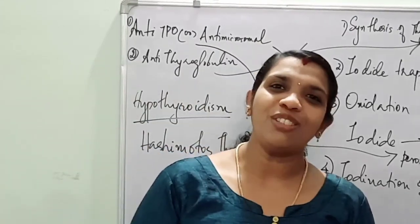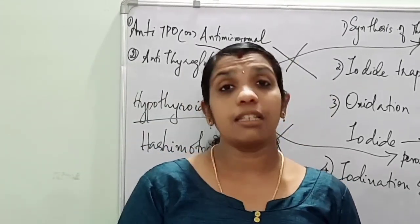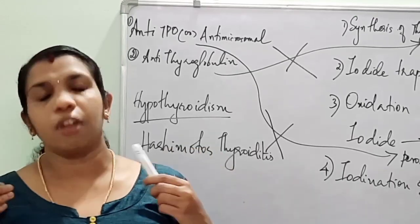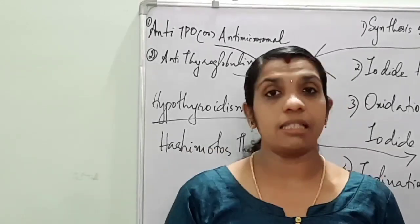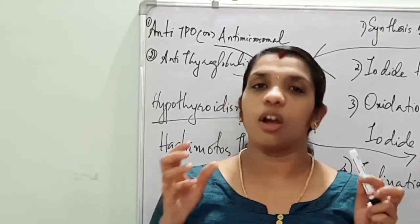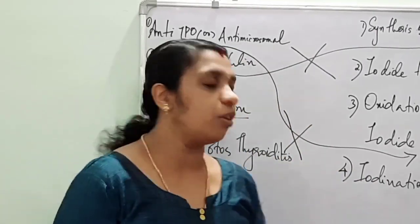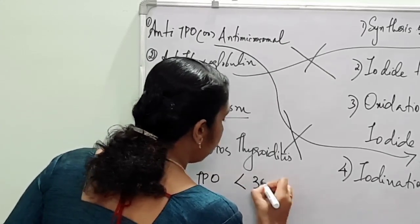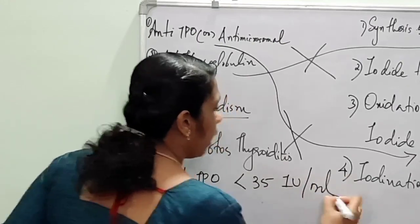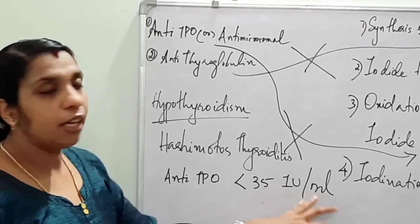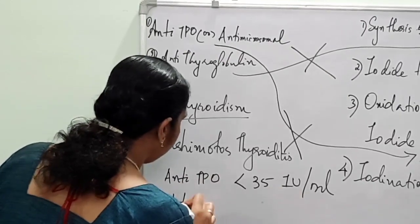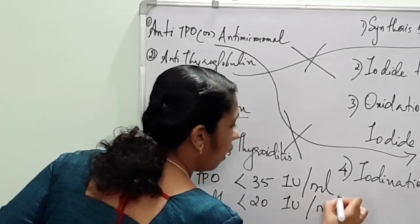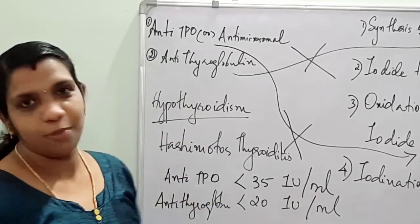Now we will see the normal values of these antibodies. In Harrison and Davidson, normal values are not given — Harrison simply states negative. However, based on many peer-reviewed studies and standard laboratories, the normal value of anti-TPO is less than 35 international units per mL, and anti-thyroglobulin is less than 20 international units per mL.